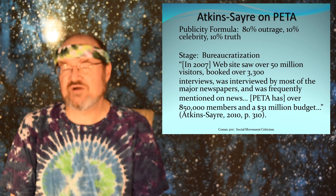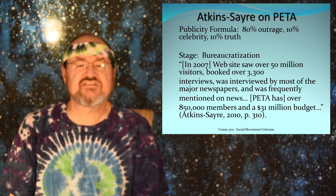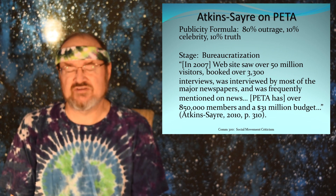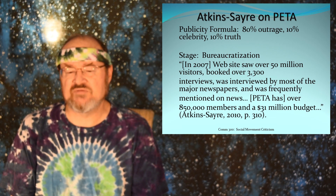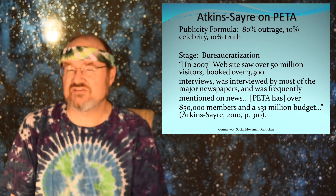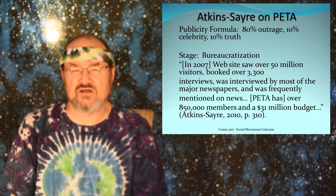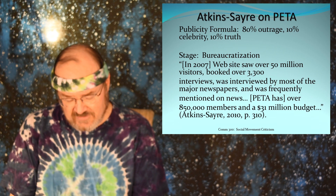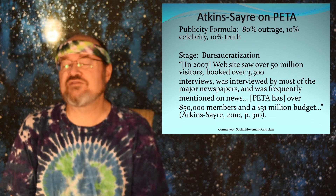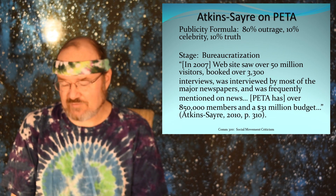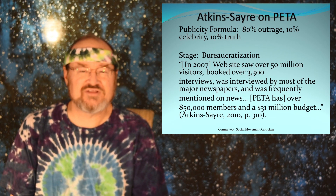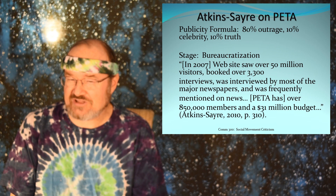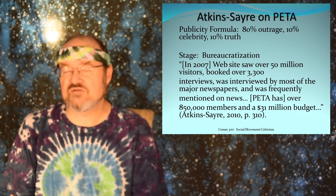What stage does she identify the animal rights movement as being in? She sees it in the bureaucratization stage — the website and staff are very professional; it's no longer a mom-and-pop organization. There's lots of lobbying going on on Capitol Hill. The year she wrote the article, the website had 50 million visitors, there were over 3,300 interviews of PETA members, and they had a budget upwards of 31 million dollars. Clearly we're not talking about a fledgling, newly emerging, or just coalescing movement — we're talking about clearly bureaucratized.